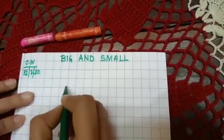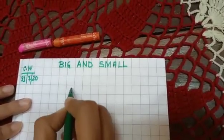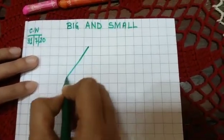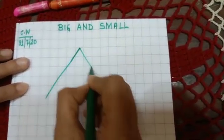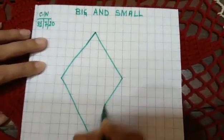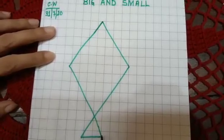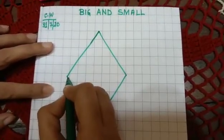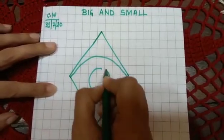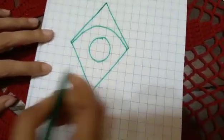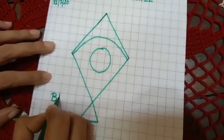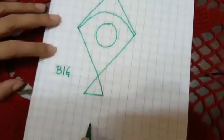So here I am drawing one big kite. And here you will write big, B-I-G. Big.